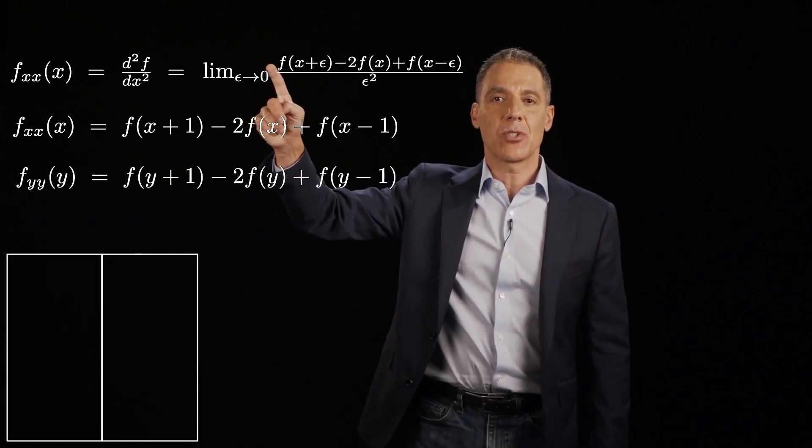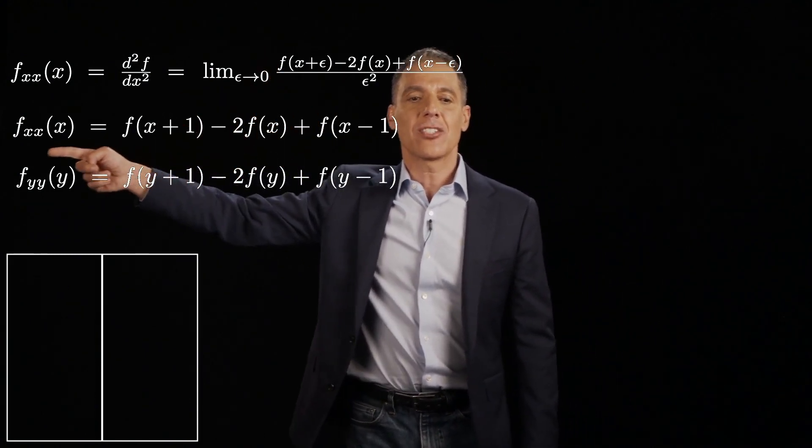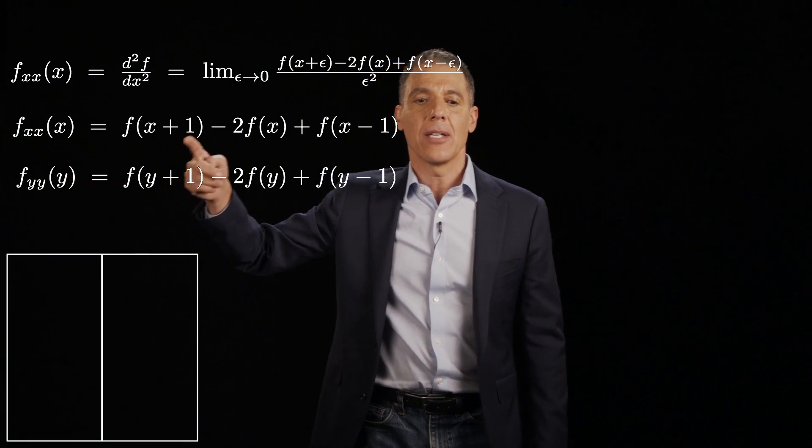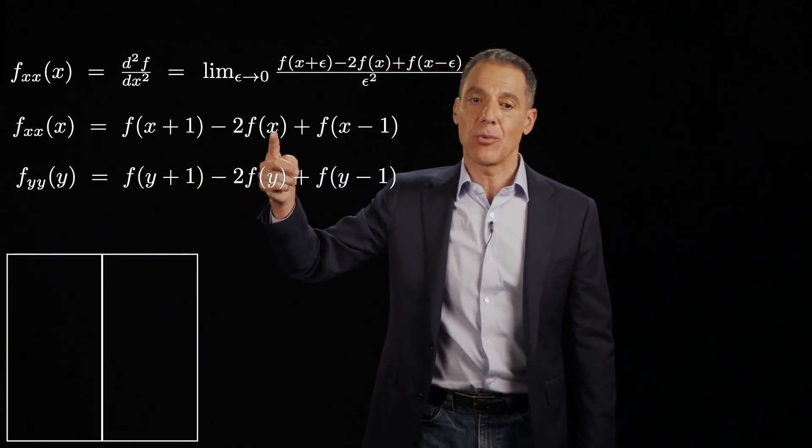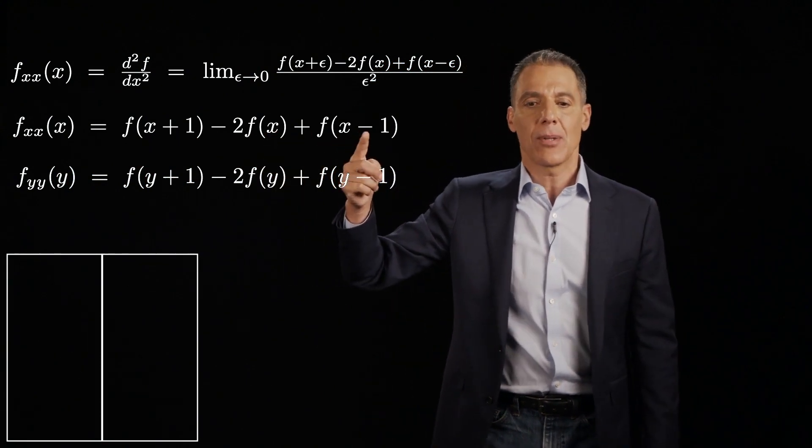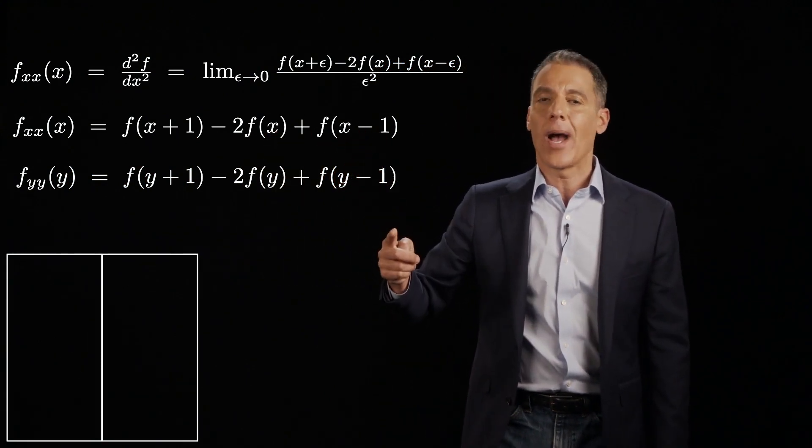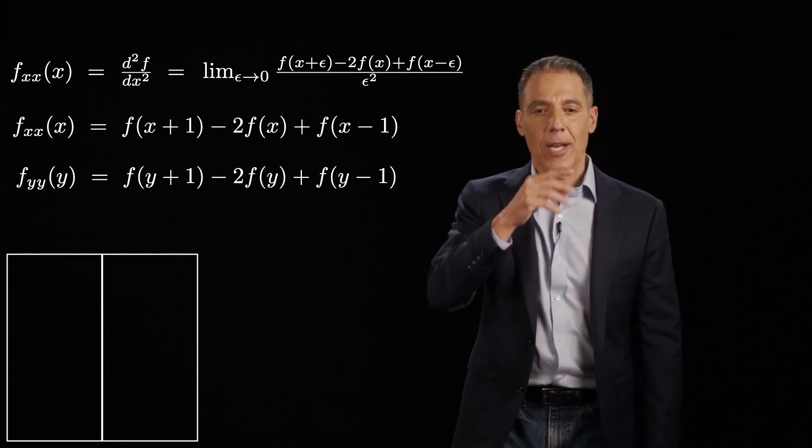So let's rewrite this continuous derivative in discrete. And let's just go ahead and do the x and the y. So the x is f(x+1). There it is. That epsilon is now 1. Minus 2f(x). That doesn't change, of course. Plus f(x-1). And then in the y direction, it's the same thing. We're just going this way.